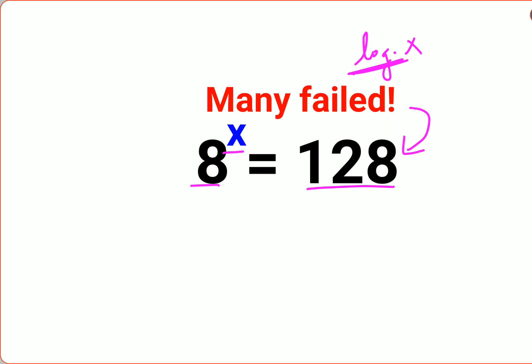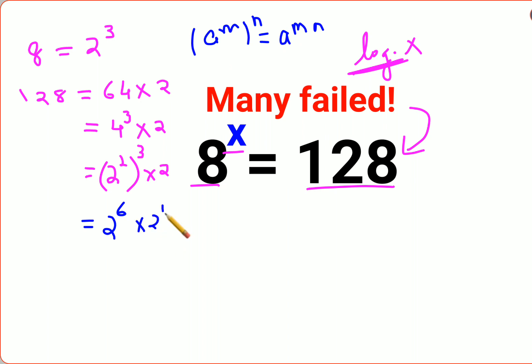See, I know that 8 can be written as 2 cube, and 128 is 64 into 2. And 64 is basically 4 cube into 2, and 4 is 2 squared, the whole raised to 3 into 2. In indices we know that a raised to m the whole raised to n can be written as a raised to m into n. So this eventually comes out to be 2 raised to 2 into 3, that is 6 into 2.